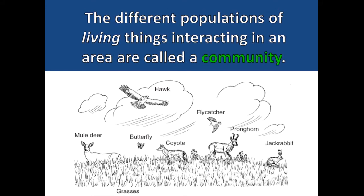The different populations of living things interacting in an area are called a community. Scientists can talk about the animal community or the plant community, or they can be more specific and talk about the bird community or the mammal community. Communities are always made up of living things that are found interacting in an area.